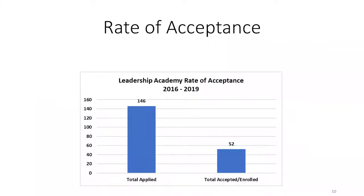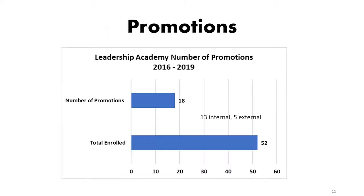In terms of our rate of acceptance over the last four years, we had 146 people apply and 52 — about a third — were accepted. We suspect we will have many more applications this year, not just because of this learning forward initiative today but also because in recent orientations we have formally built this overview in. That's definitely the number one question people ask me post-orientation, so I suspect this number will climb significantly this year.